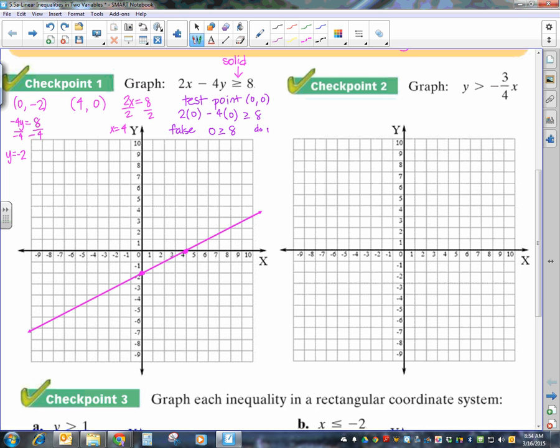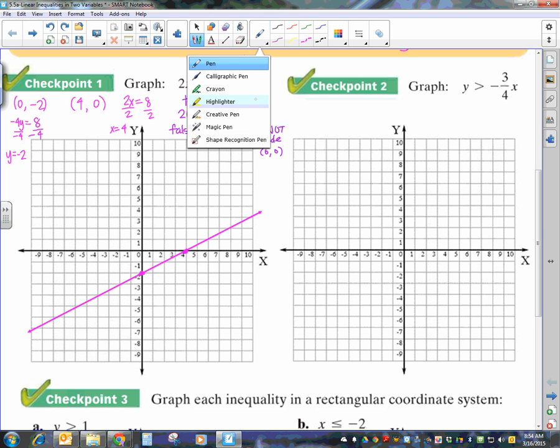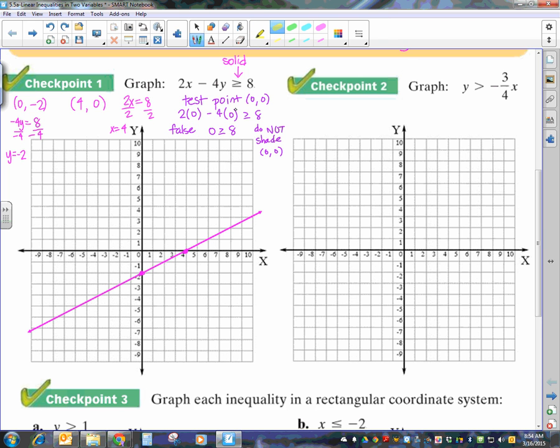So, that means do not shade the point 0, 0. So, this is 0, 0. So, I'm not going to shade on that side. I'm going to shade on the other side. And, that means that I'm going to shade here.